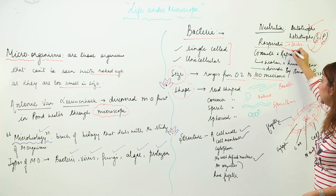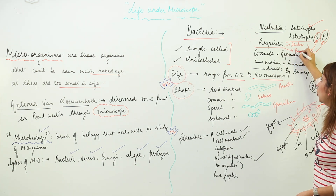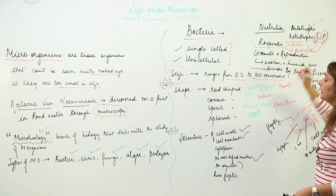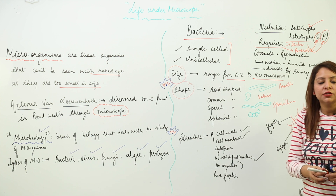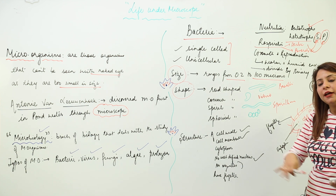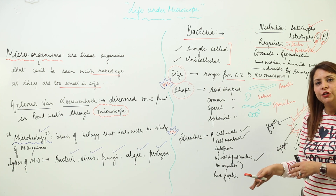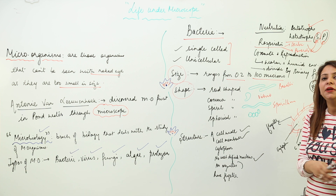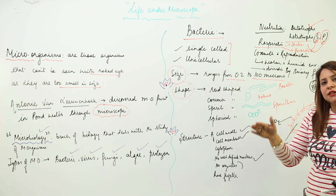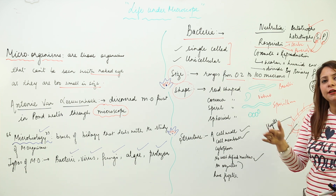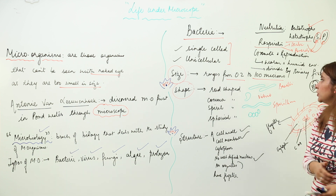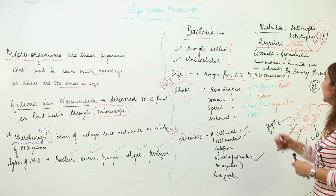Regarding respiration, bacteria are of both types. Some are aerobic — they respire in the presence of oxygen. Others are anaerobic — they do not need oxygen for respiration and can survive in its absence. So both aerobic and anaerobic bacteria are found.